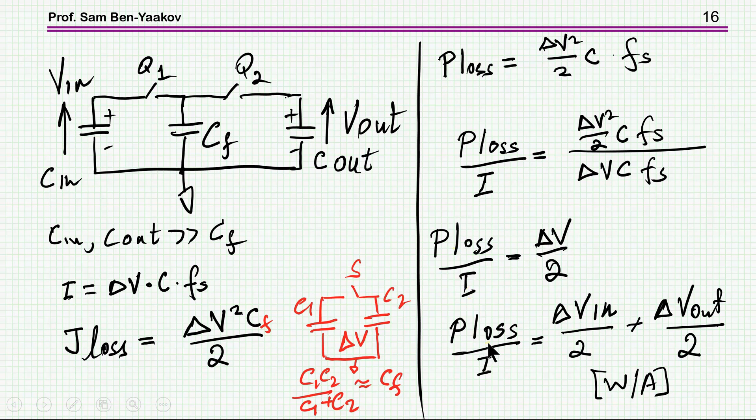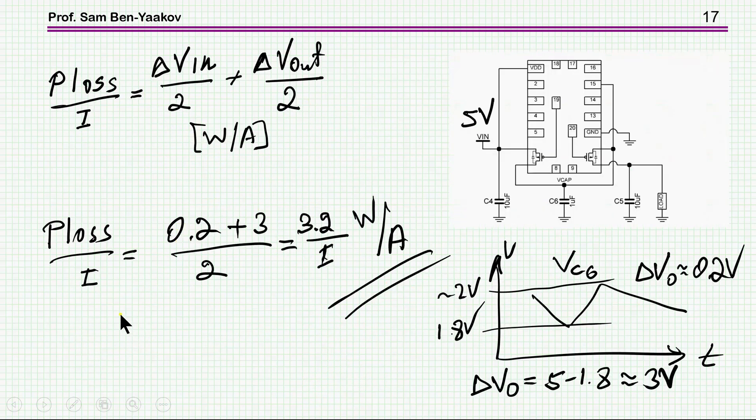Once we have this, I can estimate the loss. Well, for this, I need delta V at the input, and delta V at the output. Delta V at the input, at the output, is the difference between the hysteresis, because we go here between the low and high sides. And so this is 0.2. But here, if we have, for example, 5 volts, this is the maximum value of this chip anyhow, and we know that we start charging when the voltage of the capacitor is 1.8. So the difference is a little bit more than 3 volts. Let's say 3 volts. So this delta V for the input is 3 volts. So altogether, it's 3.2 watts per ampere. We see that it's not bad in terms of the power dissipation of this device.